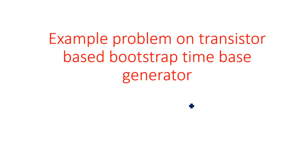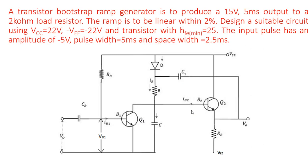In this video I am going to explain an example problem on a transistor-based bootstrap time base generator. In the previous video I gave the explanation and derivation for the transistor-based bootstrap time base generator, where we can get better linearity compared to the Miller time base generator by using some additional circuitry.